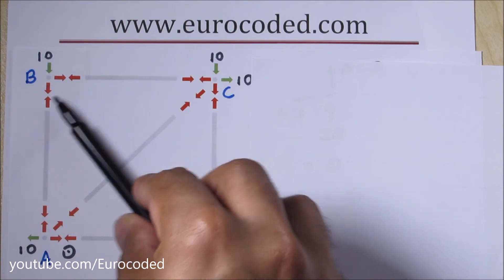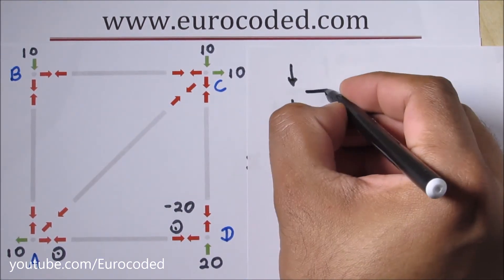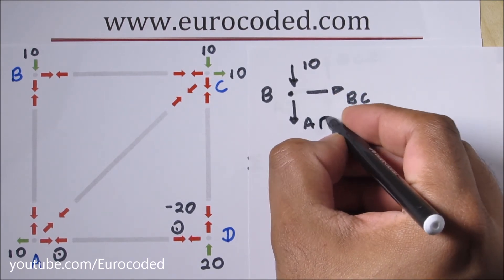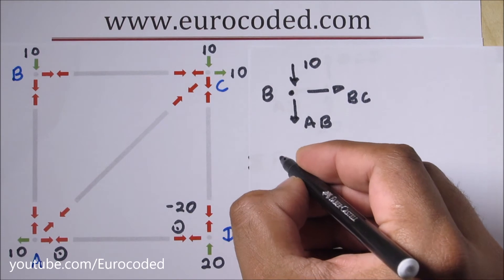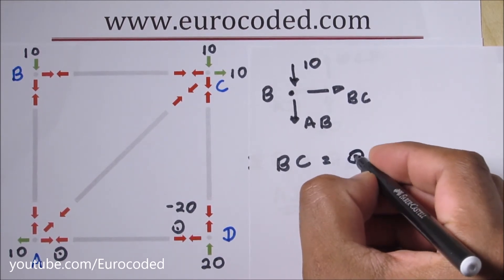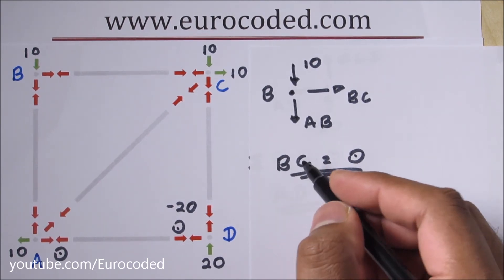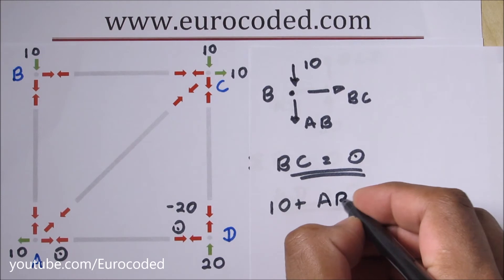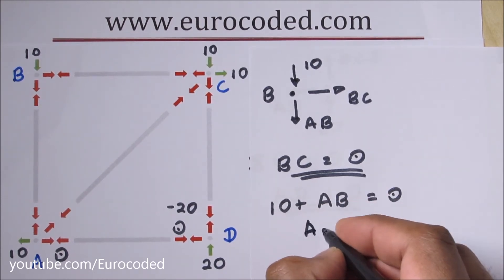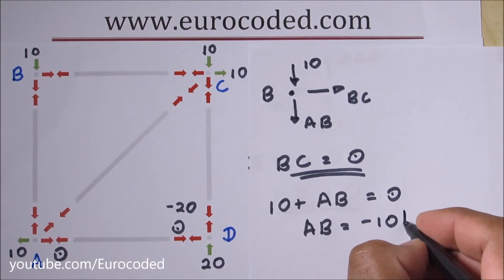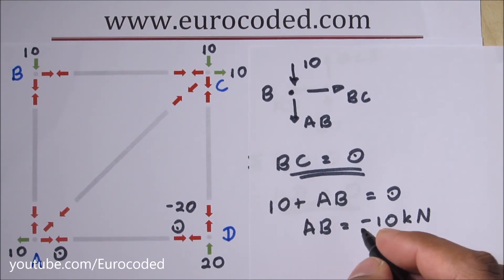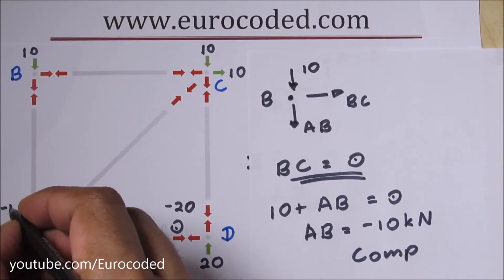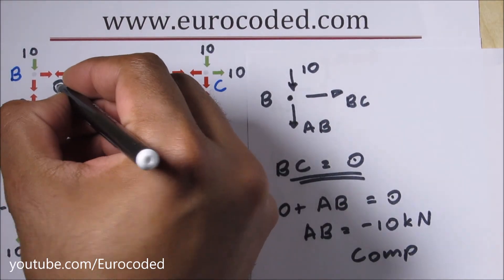Now let's look at joint B. If we look at horizontal equilibrium, we can write BC is equal to zero. And if we look at vertical equilibrium of joint B, we can write: 10 plus AB equals zero, so AB is equal to minus 10 kilo Newton — this is a 10 kilo Newton compressive force. So BC is zero and AB is minus 10.